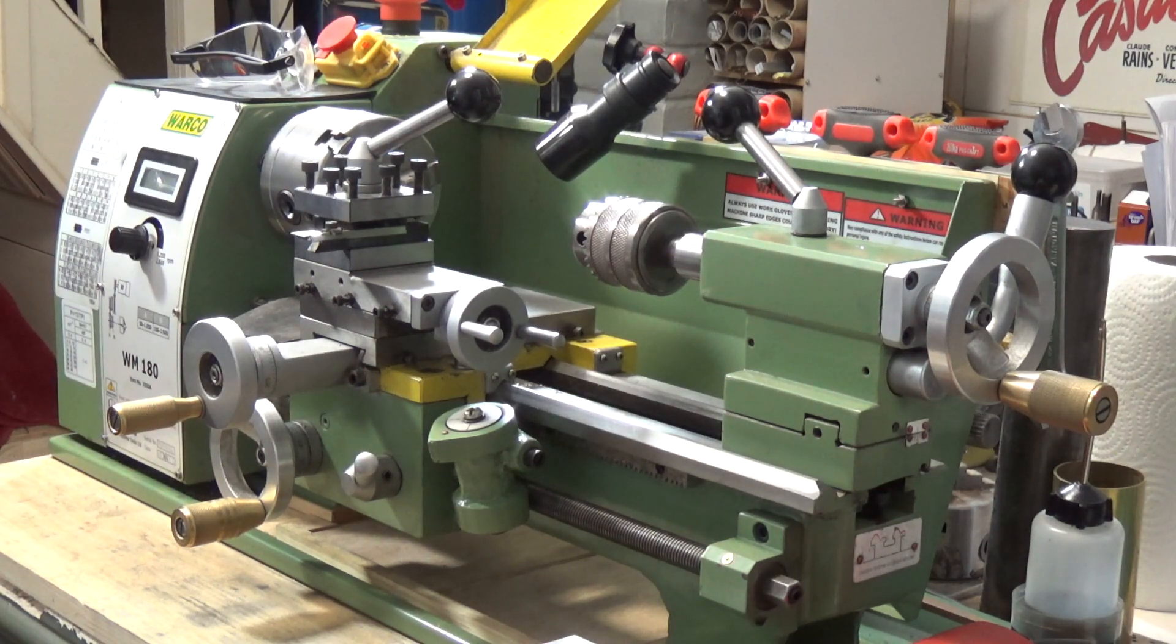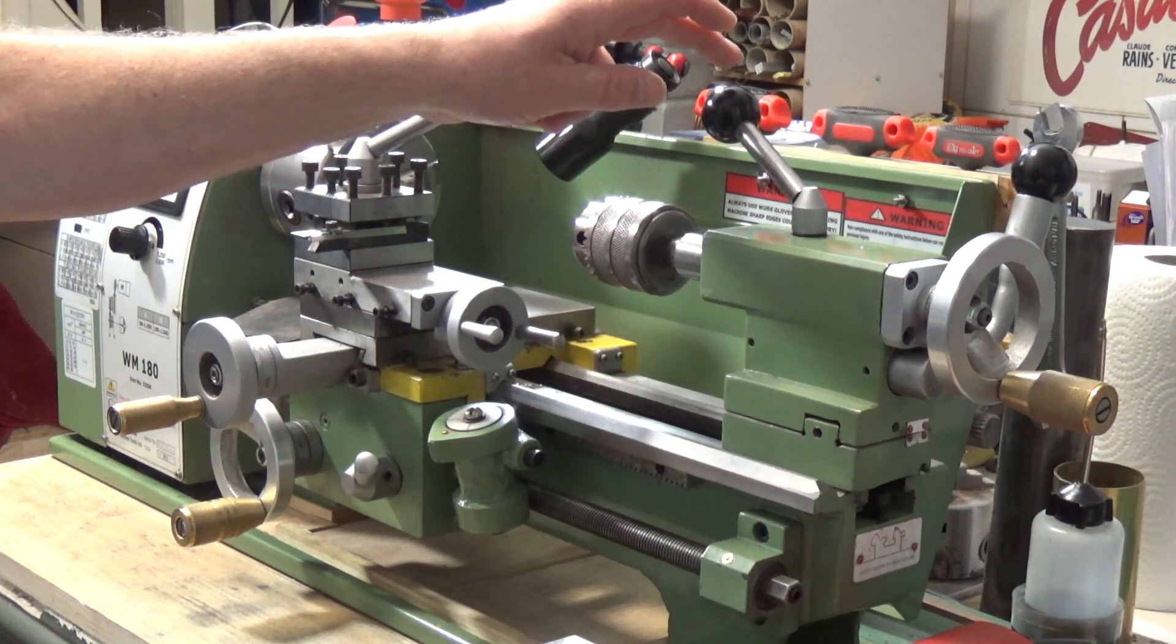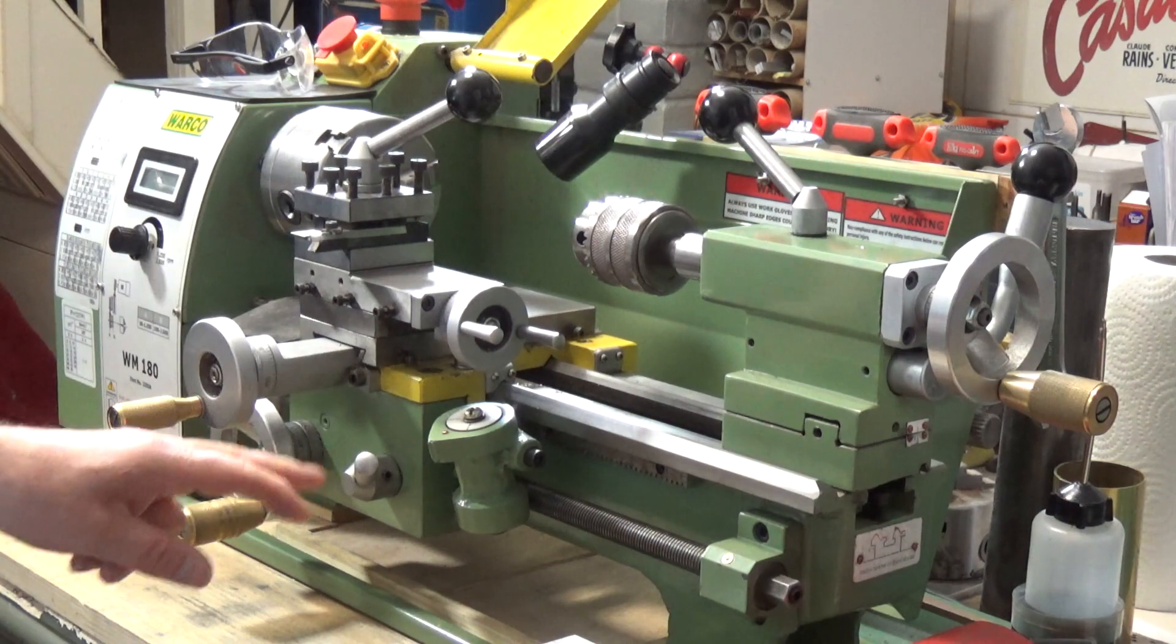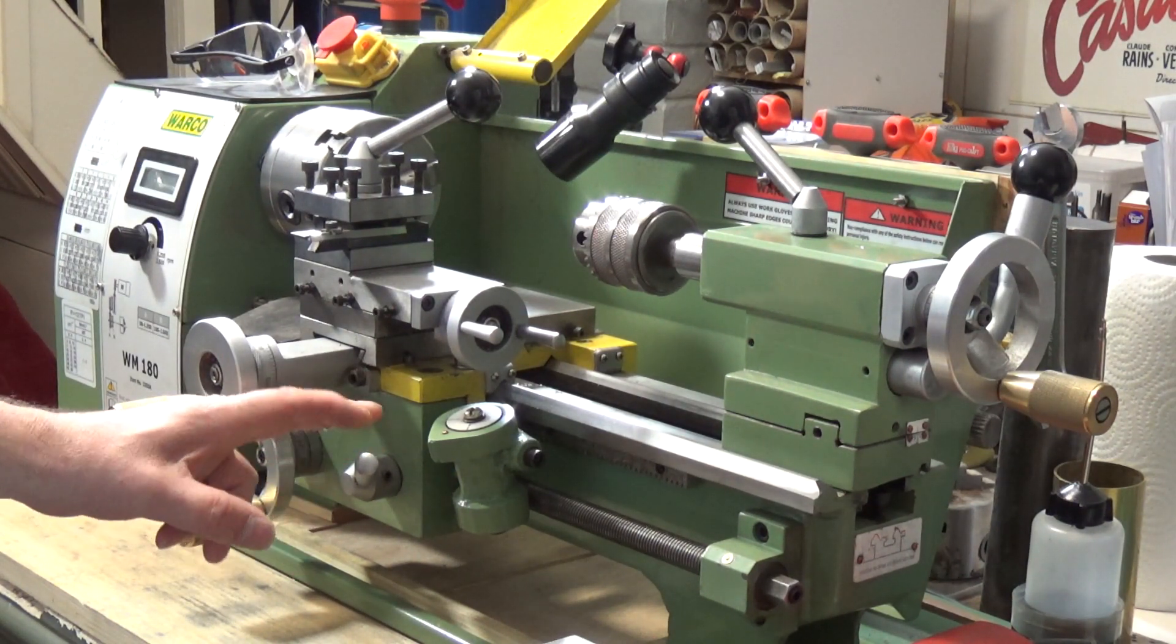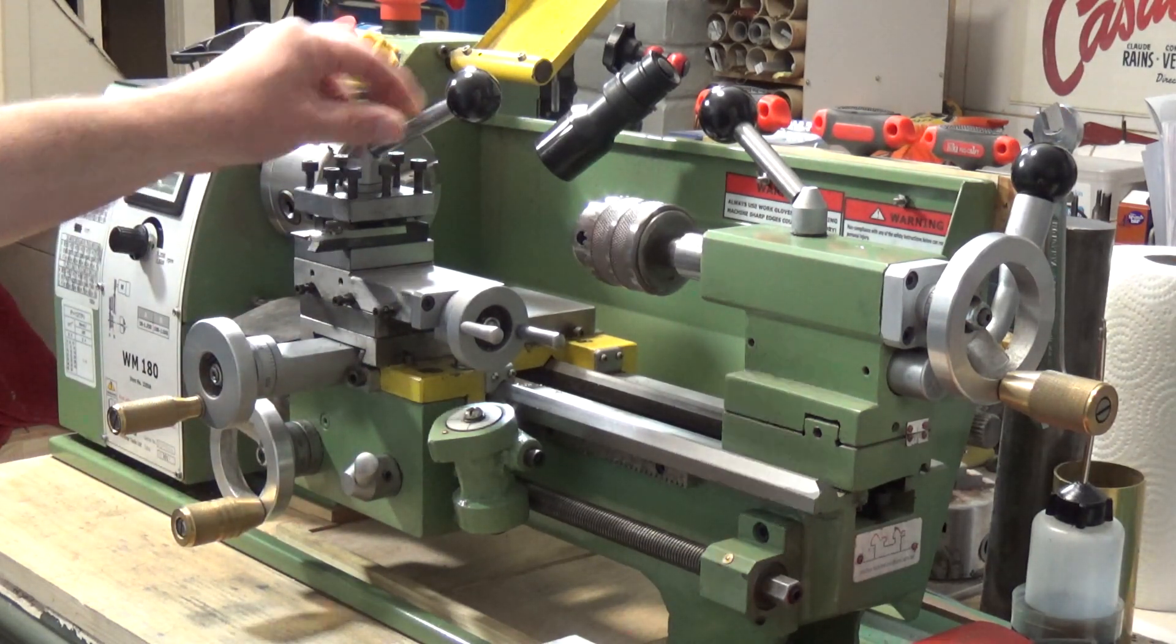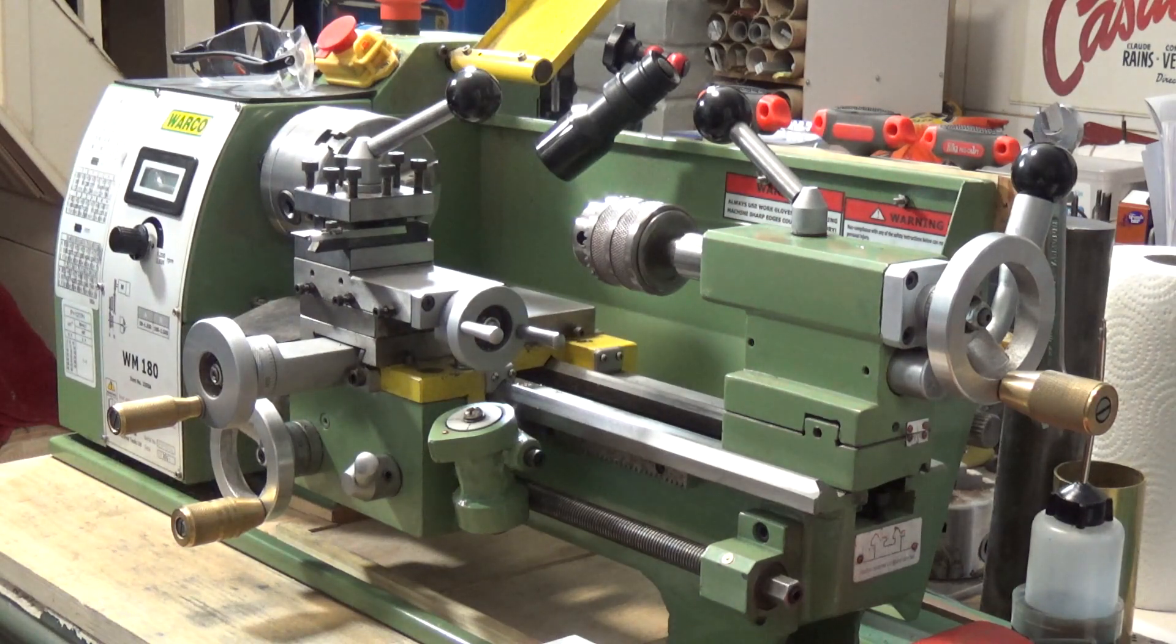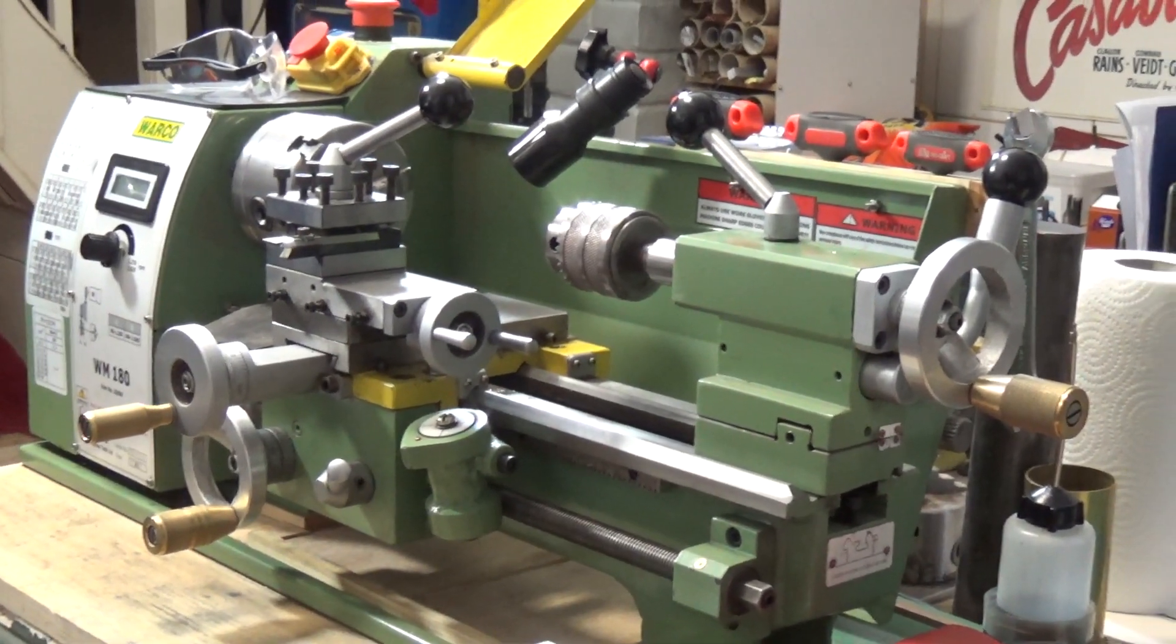But today what we're going to concentrate on is the tool post handle, the tailstock quill lock handle, and the handle which engages the power feed on the carriage. As you can see I've already modified these two, so let's move in a little bit so you can see those more clearly.